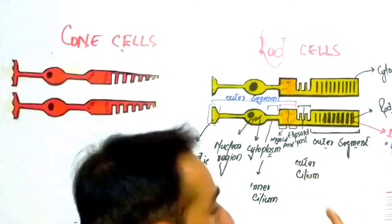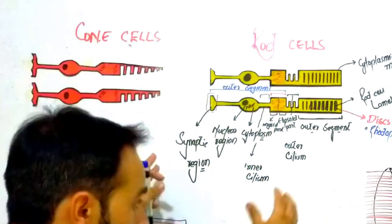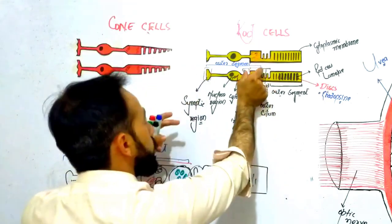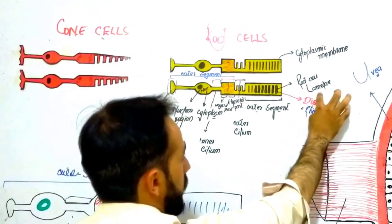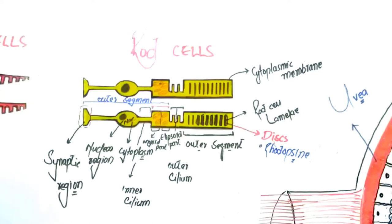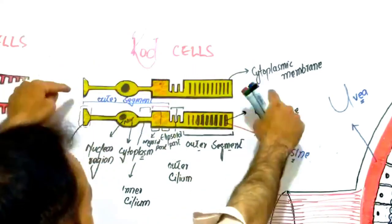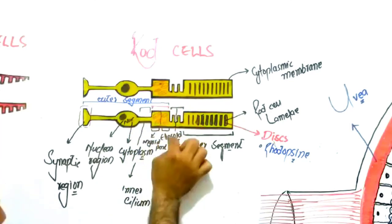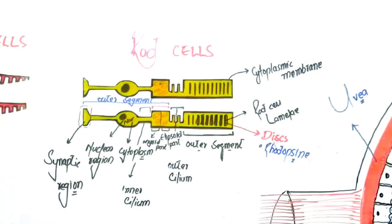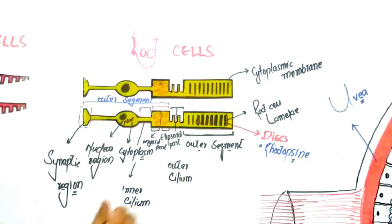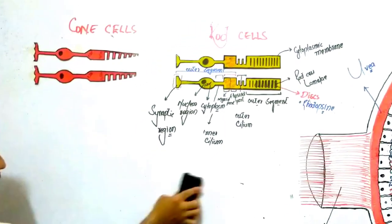To summarize: rod cells are called rod cells because they are rod-shaped. The outer segment contains rod cell lamellae with discs, and these discs contain rhodopsin — the chemical that helps generate the action potential. The cytoplasmic membrane surrounds the cell, then the outer cilium, then the inner segment divided into ellipsoid and myoid parts, then the inner cilium, nuclear region, and synaptic region. Now let's look at the cone cell.